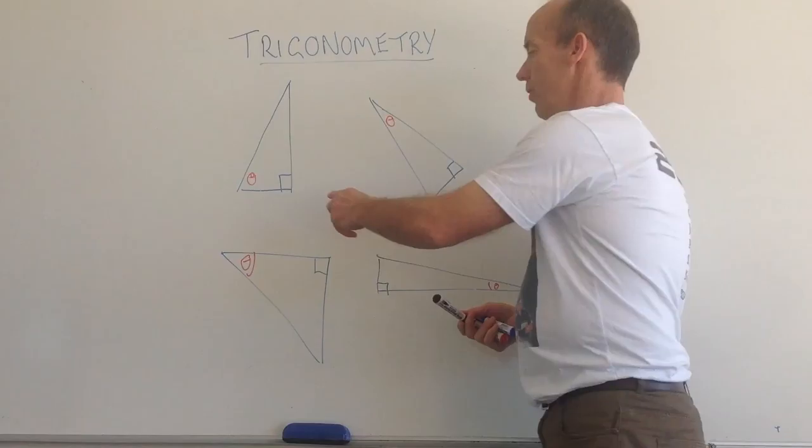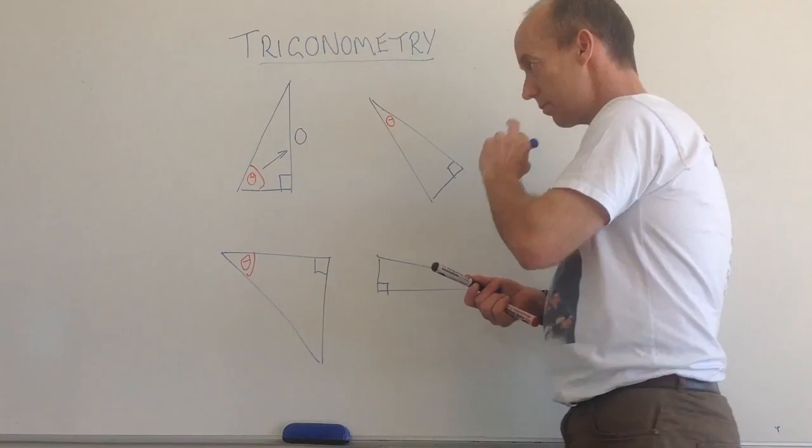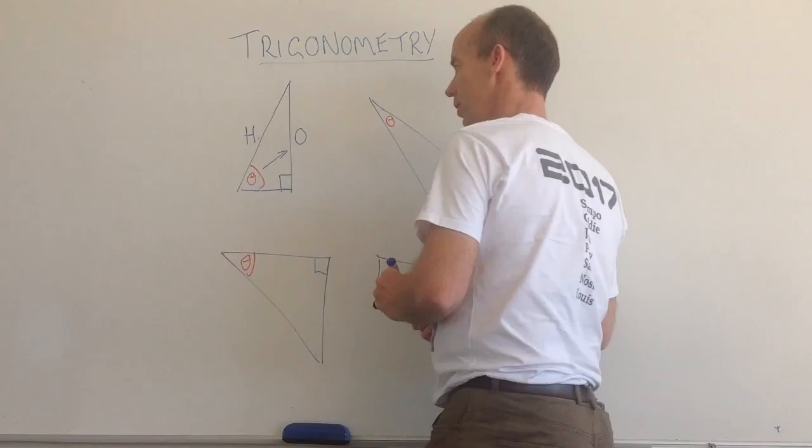For these four triangles, I'm going to label the three sides in all of those. So, for this first triangle, this is my angle. This is my opposite side. It's directly opposite the angle.